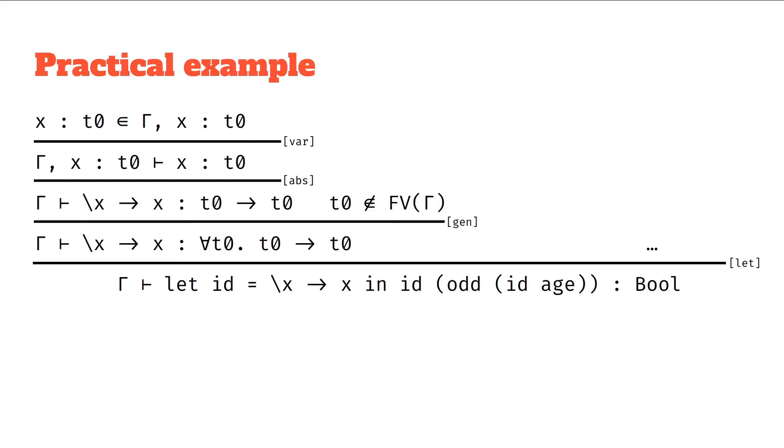So what you need here is a polytype, so for example, for-all t0, t0 to t0, because that way, you know, one time it can be int to int, and the other time it can be bool to bool, and we can instantiate it on the right hand side when we need to.